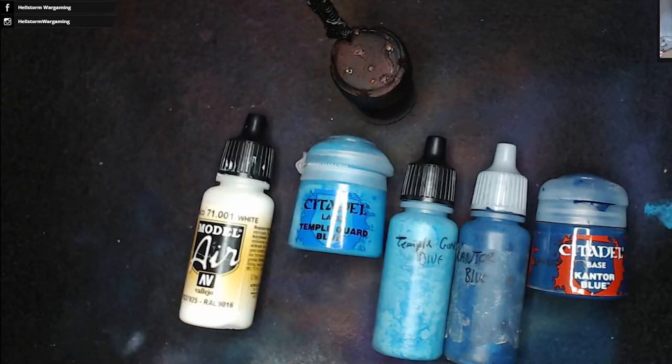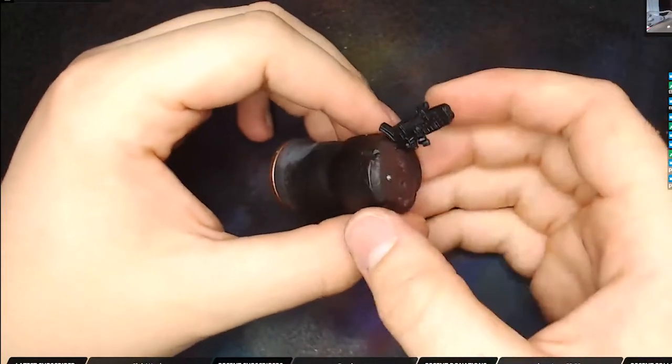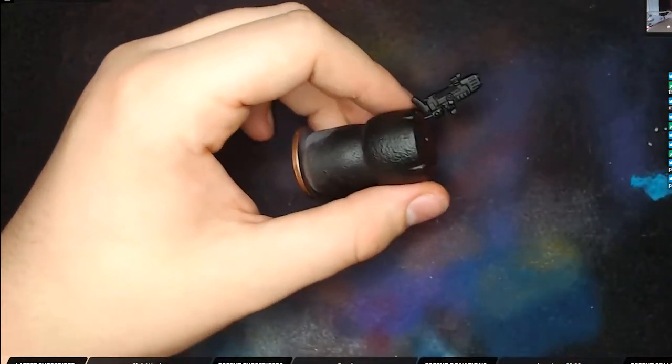So we're going to be using three colors today: Cantor Blue, Temple Guard Blue, and White. The two bottles in the middle are just made up for the airbrush and we've got a test piece that we're going to use, and we've also got some models, some Primaris Hellblasters, to work on at the same time.